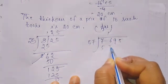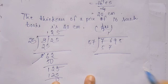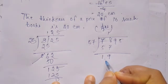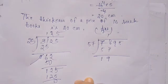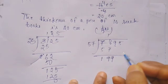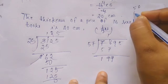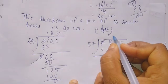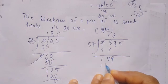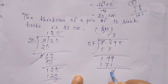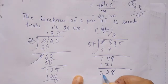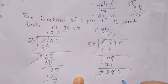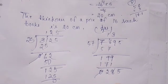57 times 1 is 57. 6 minus 7 we cannot subtract, so borrow: 16 minus 7 equals 9, then 6 minus 5 equals 1. 19 is less than 57, so we bring down 9, making 199. 57 times 3: 3 times 7 is 21, carry 2; 3 times 5 is 15 plus 2 equals 17. 57 times 3 is 171. 9 minus 1 equals 8, 9 minus 7 equals 2, 1 minus 1 equals 0. 28 is less than 57, so we bring down 5, making 285.